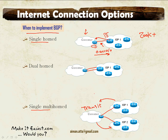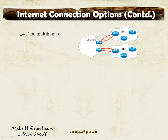Otherwise, other ISPs will learn networks through you and you will be paying them to use your connections. This is a very tricky situation, so you need to be aware of how to implement BGP filtering in a multi-homed environment.